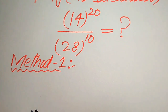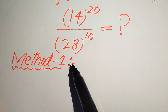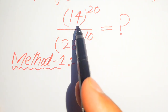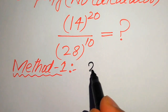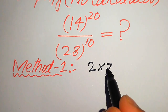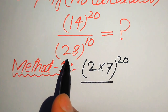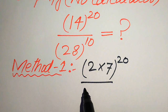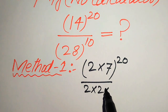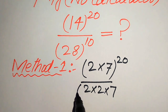In Method 1, we focus on the bases of these two terms. The base of the top term is 14, so we break 14 as 2 times 7, with a whole exponent of 20. Similarly, we write 28 as 2 multiplied by 2 multiplied by 7 — since 2 times 2 is 4, and 4 times 7 is 28 — with a whole exponent of 10.